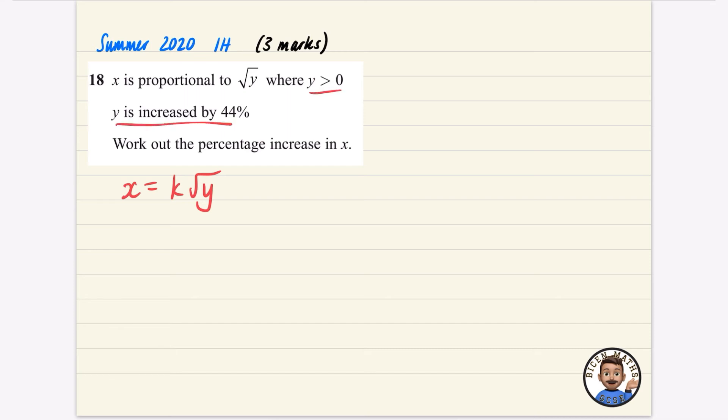It says that Y is increased by 44%. Now, if you remember, what do you multiply something by if you increase it by 44%? Well, the multiplier is to multiply it by 1.44. So if Y is increased by 44%, this question is weird. We're not even going to find out what K is.